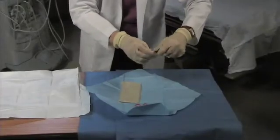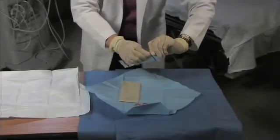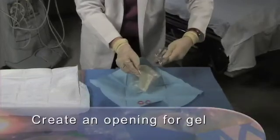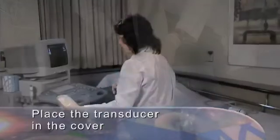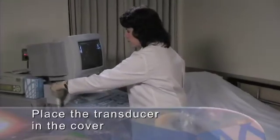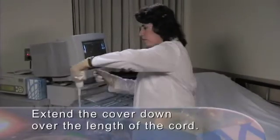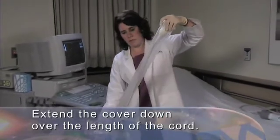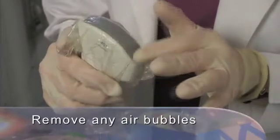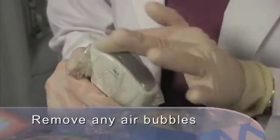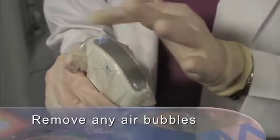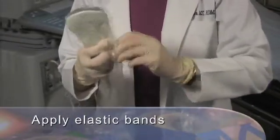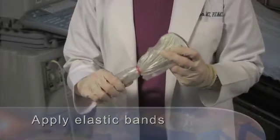Using the single person approach to applying a general purpose transducer cover, open the sterile gel packet, then create an opening in the cover and apply gel. Once the gel is in the cover, place over the array of the transducer and extend the cover down over the length of the cord, ensuring proper sterile technique. Check carefully and remove any air bubbles that are between the transducer face and the cover. While remaining in the sterile field, apply enclosed sterile elastic bands to secure the cover in place.